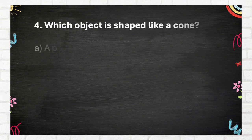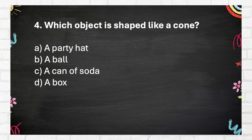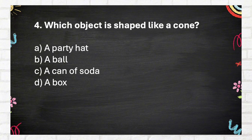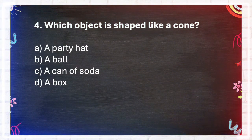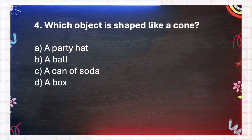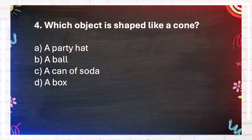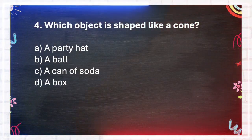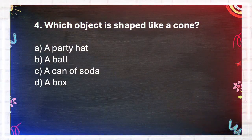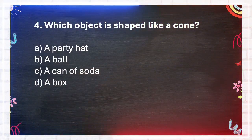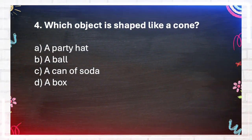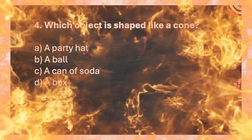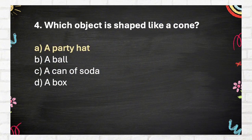Question number 4. Which object is shaped like a cone? Again, which object is shaped like a cone? A. A party hat. B. A ball. C. A can of soda. D. A box. The answer is A. A party hat.